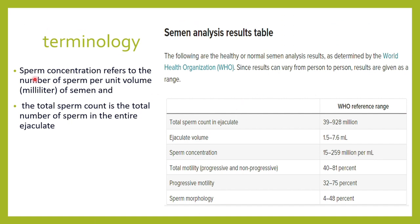So what is the difference between sperm concentration and the total sperm count? The sperm concentration refers to the number of sperm per unit volume — how many sperms are there per ml of semen. That is the sperm concentration, and its limit should be 15 to 259 million per ml of semen.